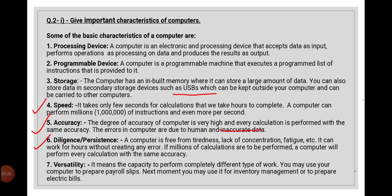The computer can perform a variety of tasks at the same time or at different timings. For example, we can write applications and letters, calculate staff salaries, download files from the internet, watch movies, and listen to songs — all through the computer, either at the same time or at different times.